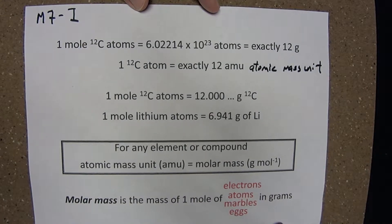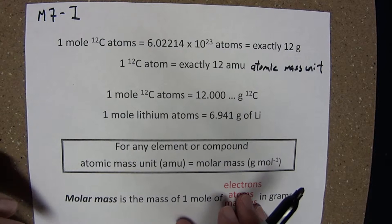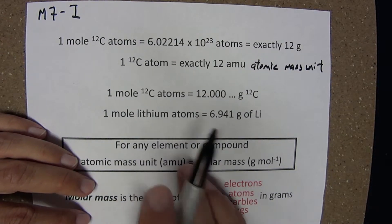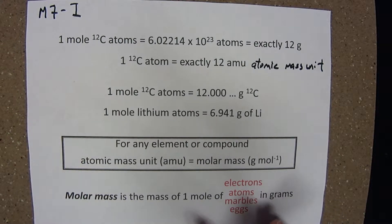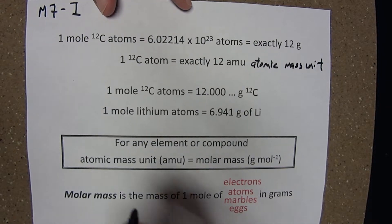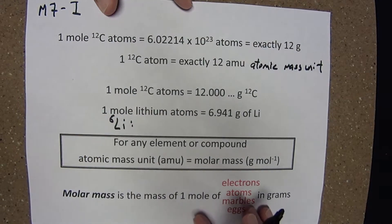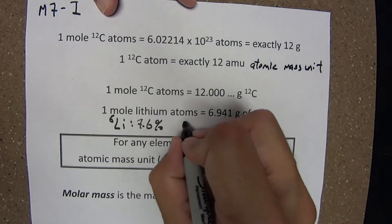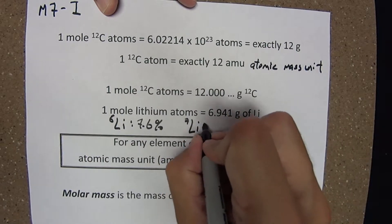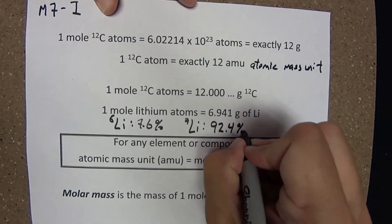Now, we rarely work with isotopically pure substances. If we're working with something like lithium, recall that those atomic masses on the periodic table were weighted averages that accounted for the percent abundance of the naturally occurring isotopes. For lithium, there are two naturally occurring isotopes. They are lithium-6, which accounts for about 7.6% of lithium atoms, and lithium-7.